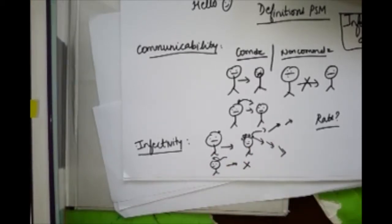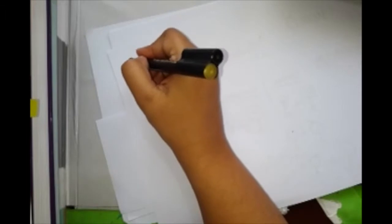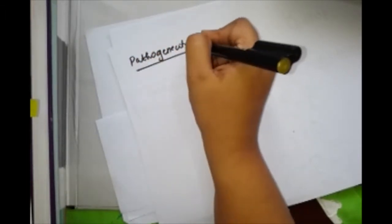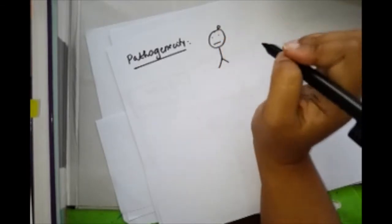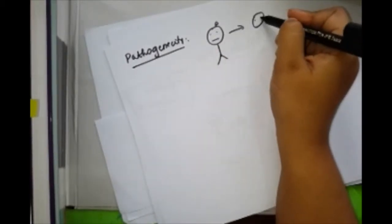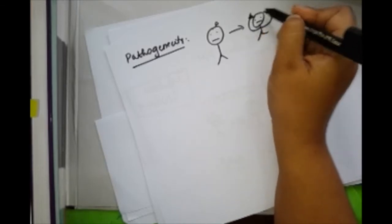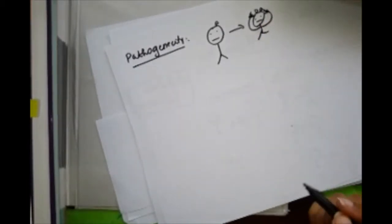Now next is pathogenicity. Pathogenicity is ability to invade—after invading, it will even cause clinically apparent illness. So it will not just invade, but it will annoy this guy. It will cause scalp dermatitis.